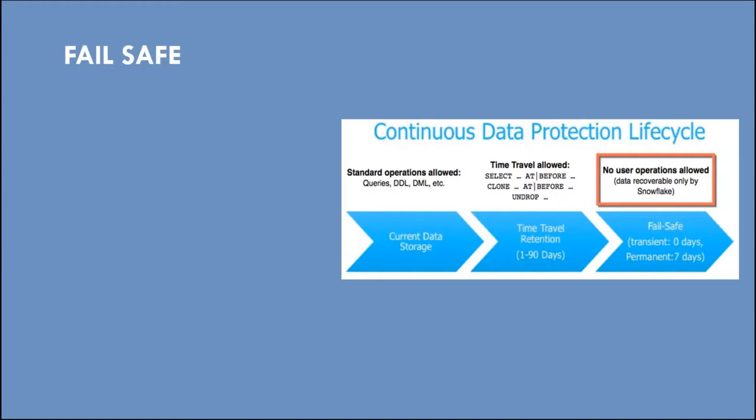For permanent tables, we have the retention period up to 90 days. But for transient and temporary tables, we just have up to one day. The minimum time travel period is zero days. We have already seen how to alter the values of the data retention time period in the previous section.